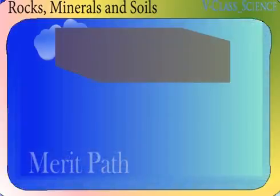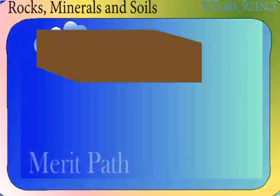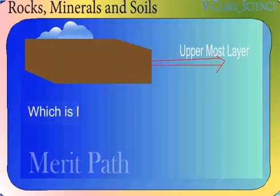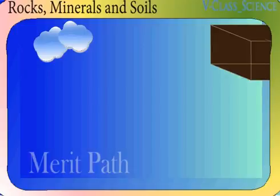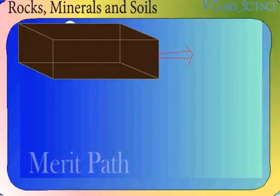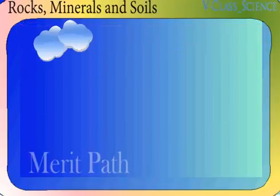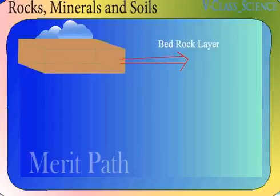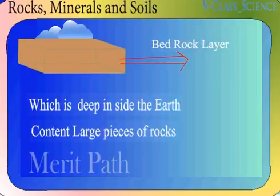There are three layers of soil. The uppermost layer is the most fertile layer where all agriculture activities take place. The middle layer or the subsoil is where the roots reach. And the third layer called the bedrock is deep inside the earth and contains large pieces of rock.